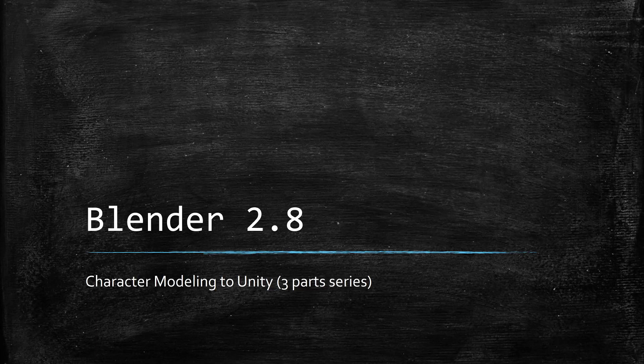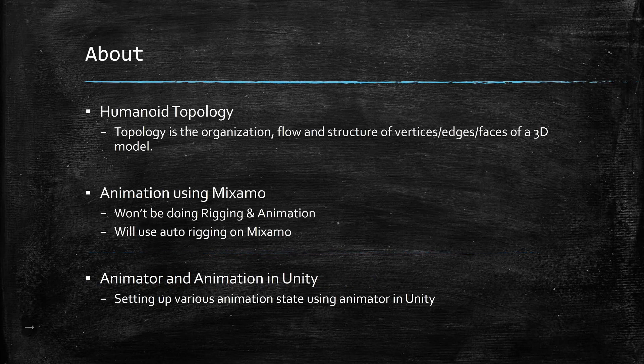Welcome back to another tutorial on Blender. This time we're going to look into 3D character modeling. Character modeling itself is quite complicated, so it'll be broken up into a three-part series. We'll do the model, then the animation, then getting it into Unity. So basically those are the three different parts.